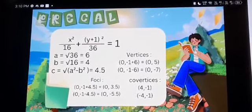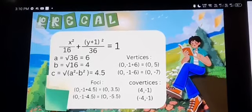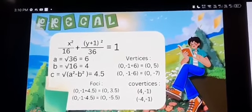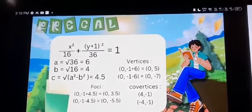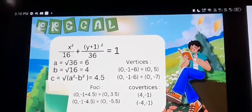The foci should be at 0, negative 1 plus 4.5, and 0, negative 1 minus 4.5.